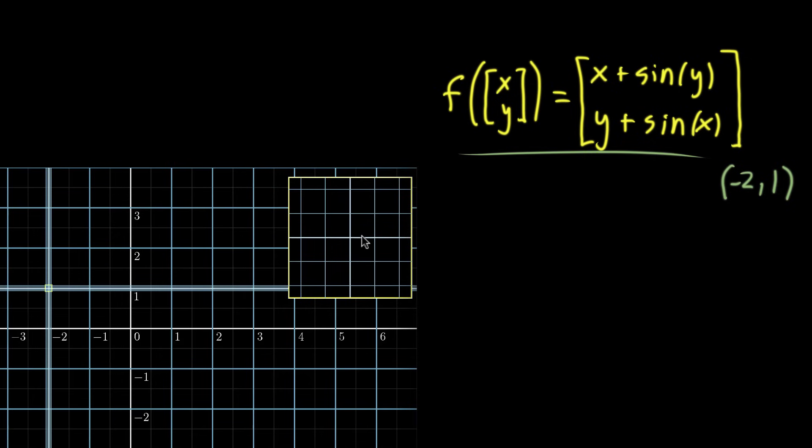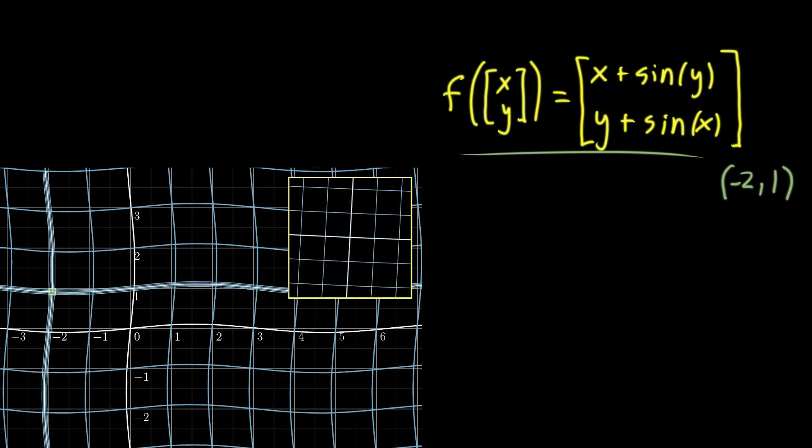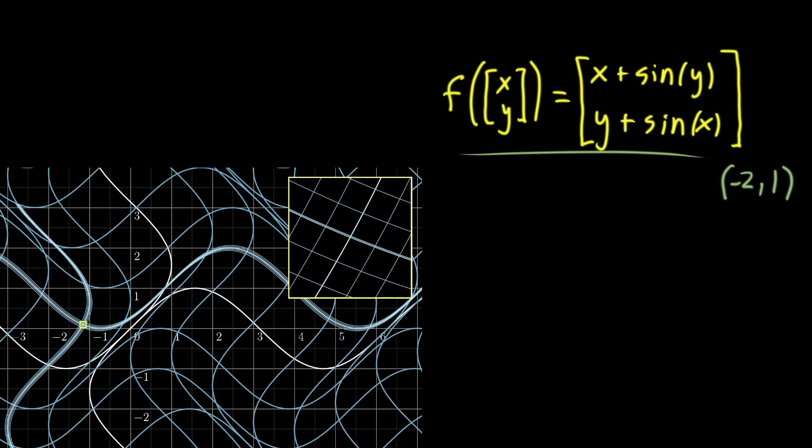And over here, this square shows the zoomed in version of that neighborhood. And what we saw was that even though the function as a whole, as a transformation, looks rather complicated, around that one point, it looks like a linear function. It's locally linear.